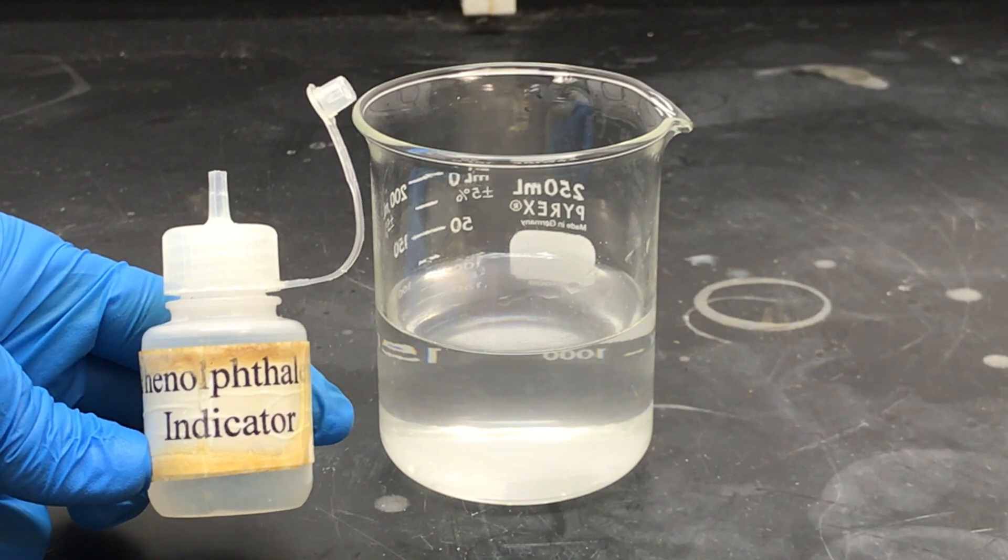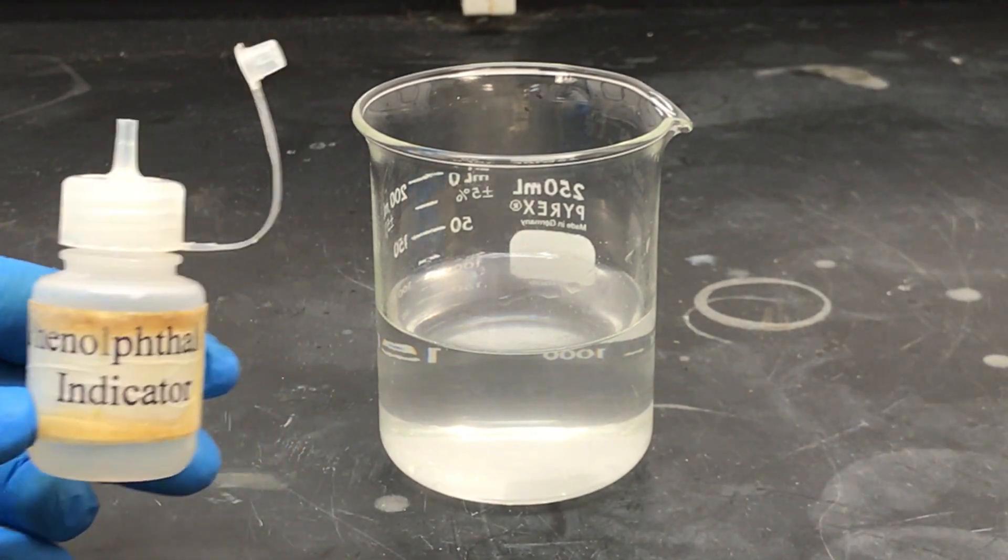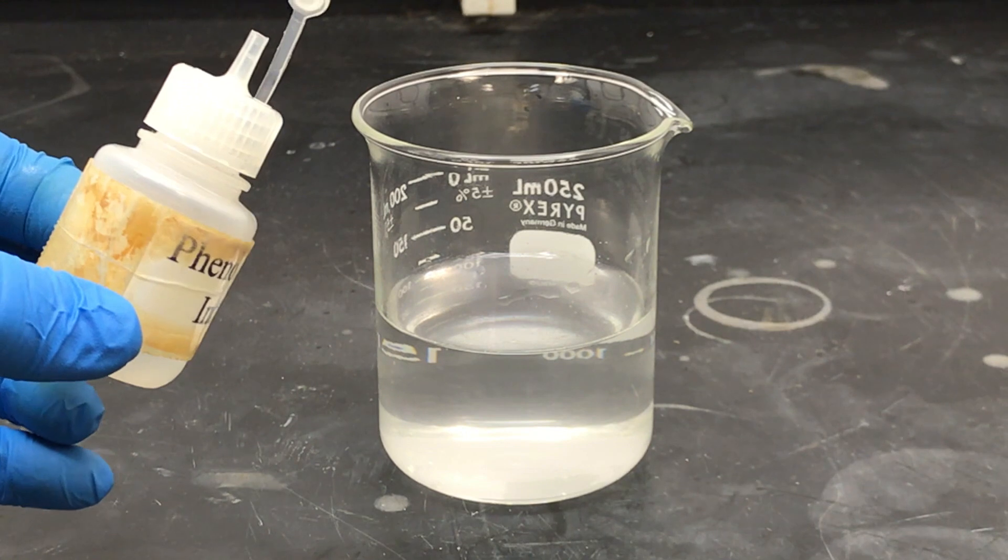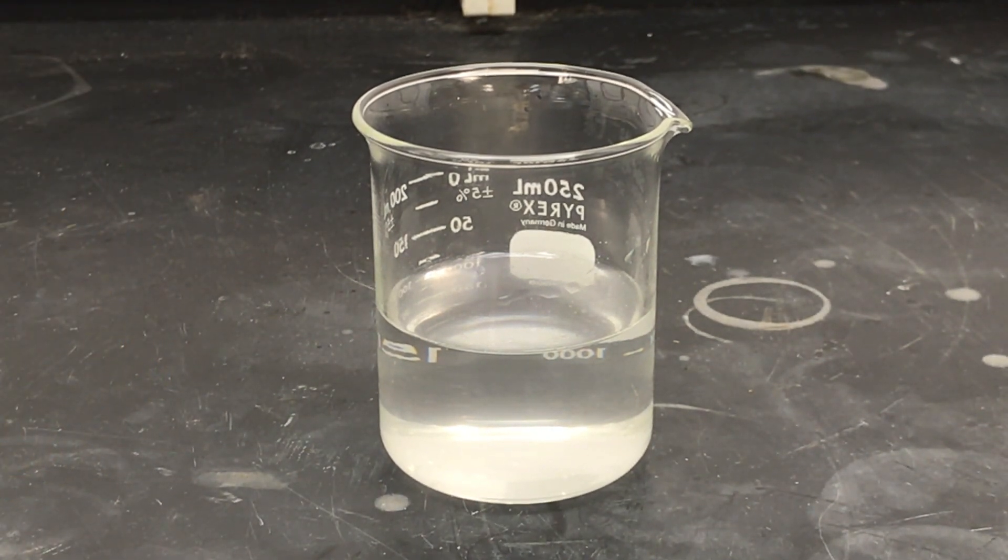In acidic or neutral conditions, the phenolphthalein solution is a clear colorless liquid. When the phenolphthalein comes in contact with a basic solution, it turns a lovely pink color.